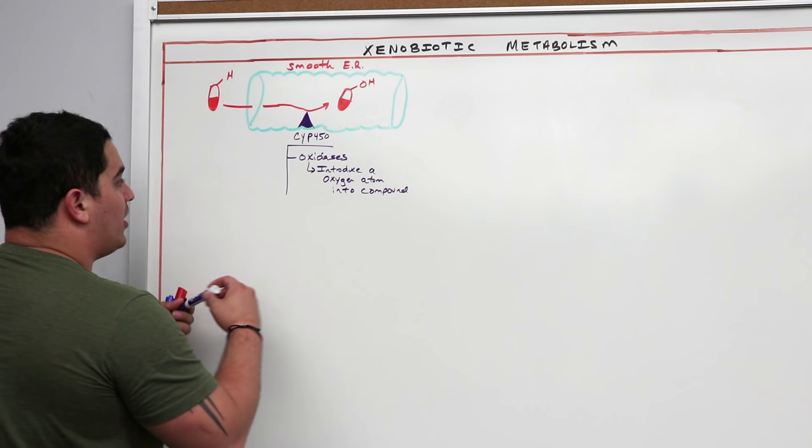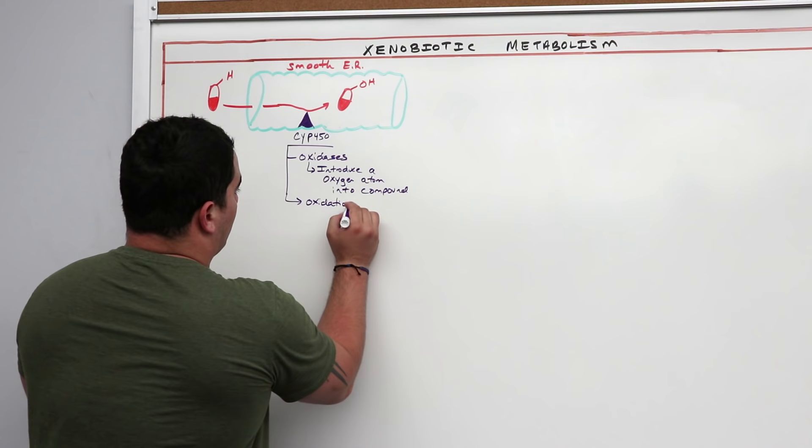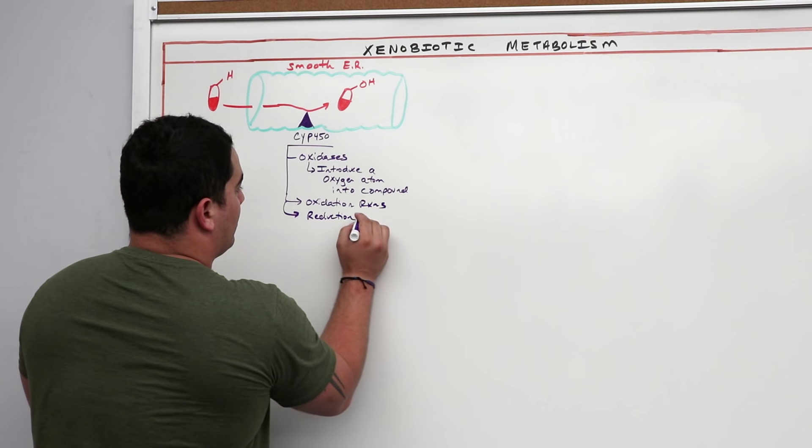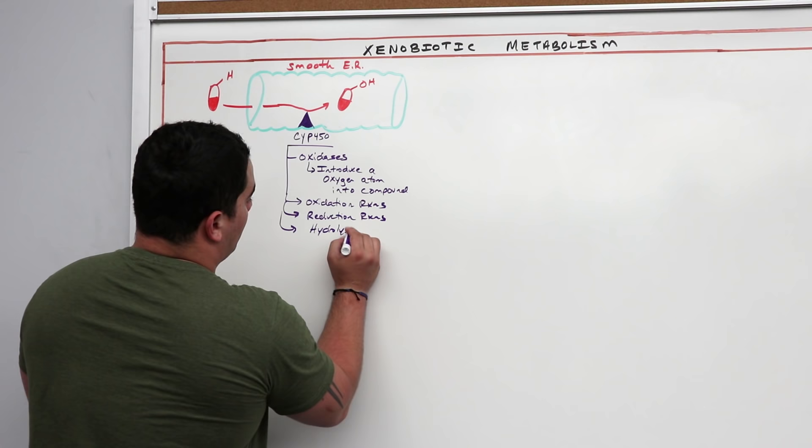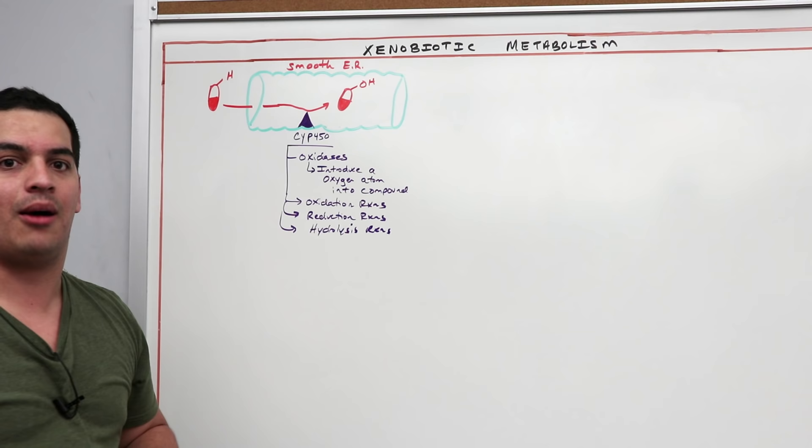The types of reactions performed by the cytochrome P450 complex include oxidation reactions, reduction reactions, and hydrolysis reactions. It's super important to understand all of these for the cytochrome P450 complex.